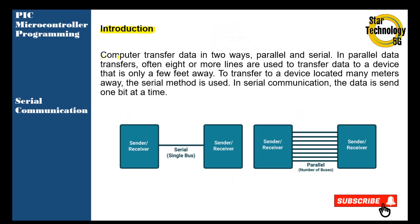Computers transfer data in two ways: parallel and serial. In parallel data transfer, 8 or more lines are used to transfer data to a device that is only a few feet away. To transfer to a device located many meters away, the serial communication method is used.